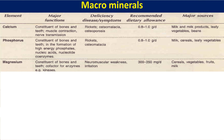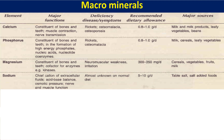Magnesium is a constituent of bone and teeth and a cofactor for enzymes like kinases and synthases. Wherever ATP is involved in an enzymatic activity, magnesium is required. Its deficiency causes neuromuscular weakness or irritation. The requirement is 300 to 350 mg per day, and major sources are cereals, vegetables, fruits, and milk.